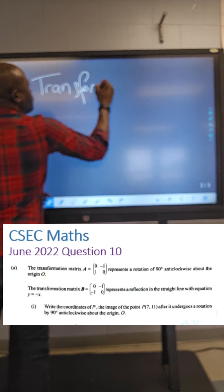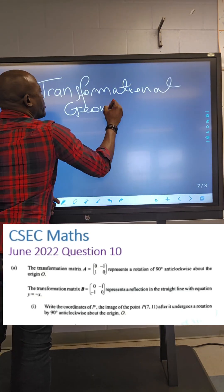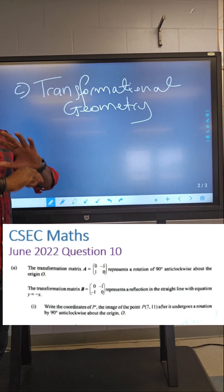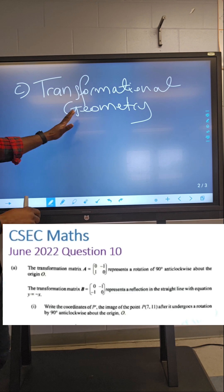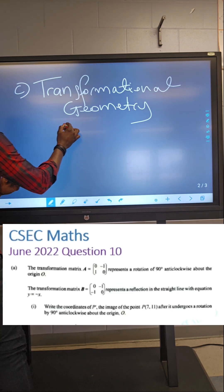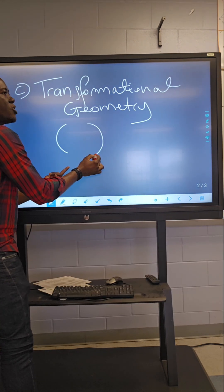Transformation - reflection, enlargement - they could come here because they're all given in a matrix.